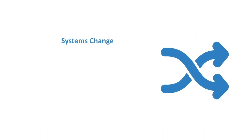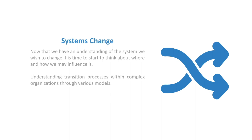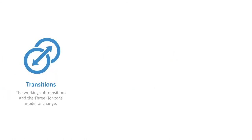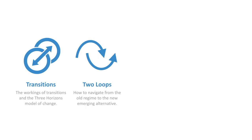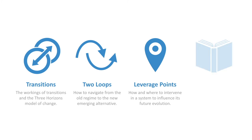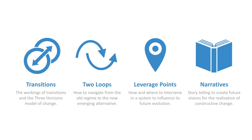We then dive into systems change. Having changed our way of thinking to a more holistic paradigm and mapped the system to understand how it's working, we can start thinking about actually intervening. Systems change is really about working with transitions in complex systems. We talk about transitions through different models including the three horizons model for change and the two loops model, which focuses on the connection between the old regime and new emerging alternatives. We look at leverage points for how to intervene in the system, and narratives for change — telling stories to create future visions for constructive change.